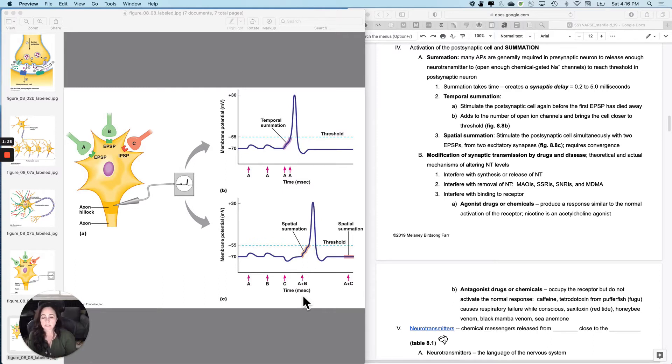So this concept is called summation. Generally speaking, many action potentials on the presynaptic cell are required to release enough neurotransmitter to open enough, for instance, ligand-gated sodium channels to reach threshold on the postsynaptic neuron. If I just stimulated A once, and this is an EPSP, an excitatory synapse, I'm going to get a little bit of depolarization. If I let it completely repolarize back to minus 70 and I stimulate A again, I don't get any additive effect.